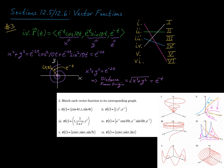Notice also the z coordinate is e to the negative t, so as x and y are spiraling inward, the height is also approaching 0 exponentially. If you project this curve down onto the xy plane you see the spiral effect, and the downward corkscrew pattern reflects the fact that the z coordinate is going to 0.